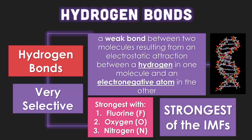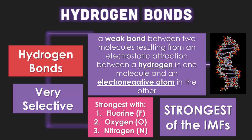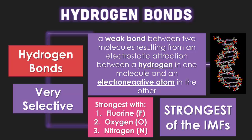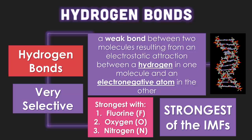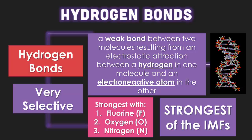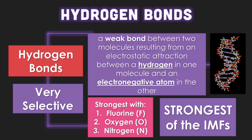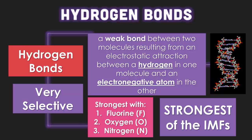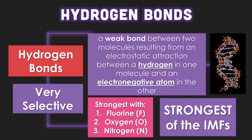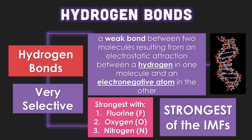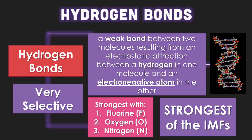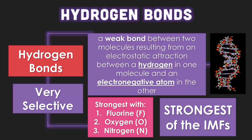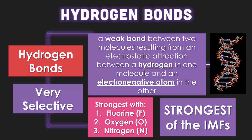Van der Waals forces split between two types: London dispersion, which is the weakest, and dipole-dipole, which is medium strength. Hydrogen bonds are your strongest of all the intermolecular forces, but they can only exist between hydrogen and one of those three elements. One way to memorize it: hydrogen bonds are FON — F-O-N, standing for fluorine, oxygen, and nitrogen.